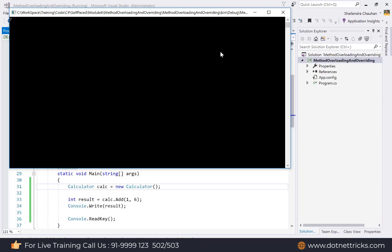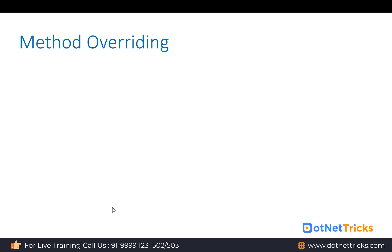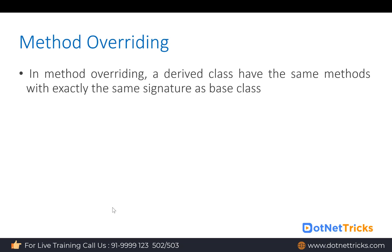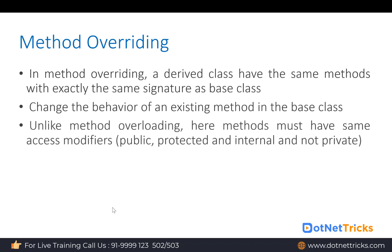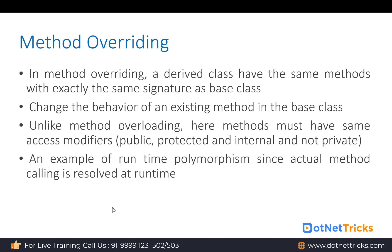Next, let's understand method overriding. In method overriding, a derived class has methods with exactly the same signature as in the base class. The objective is to change the behavior of an existing method in the base class. Unlike method overloading, the method must have the same access modifier — public, protected, or internal. You cannot use private in method overriding, and the access modifier must be the same in both the base and derived class.